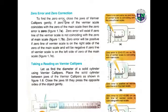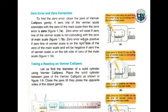To find zero error, close the jaws of the vernier caliper gently. If the zero line of the vernier scale coincides with the zero of the main scale, then the zero error is zero. Zero error will exist if the zero of the vernier scale does not coincide with the zero of the main scale. Zero error is positive if the zero line of the vernier scale is on the right side of the zero of the main scale.